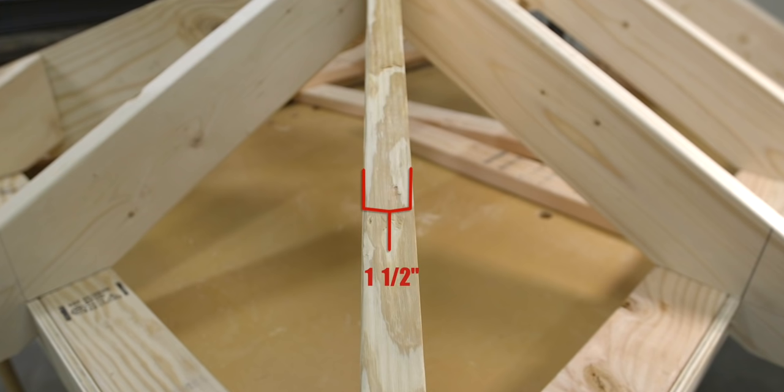Now there's one thing to note about the Construction Pro calculator, and that it doesn't take into account the thickness of the hip when calculating the jack rafters. Therefore, because our hip is an inch and a half thick,